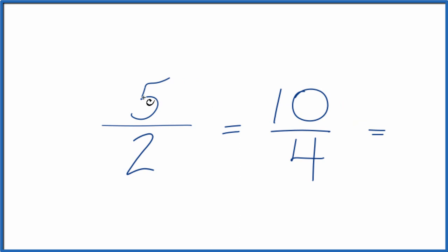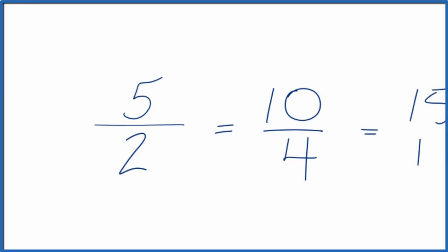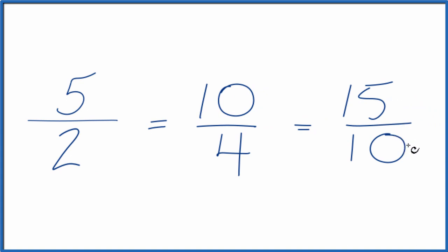So 5 times 3 is 15, 2 times 5 is 10. So 15 tenths, that's another equivalent fraction for 5 over 2.